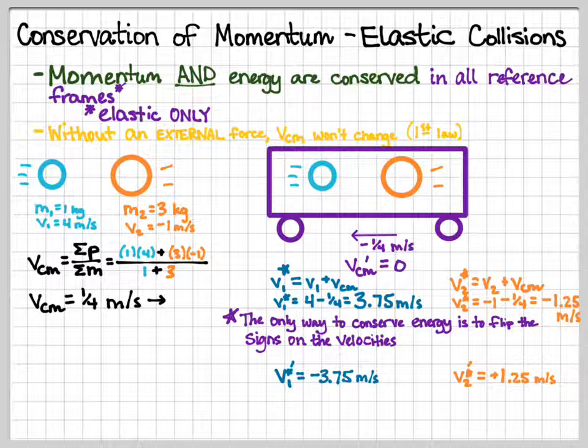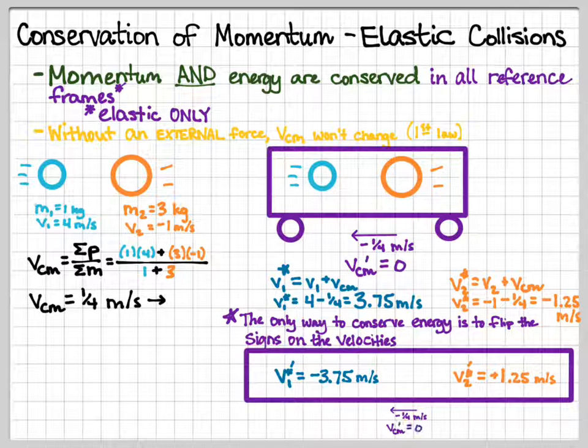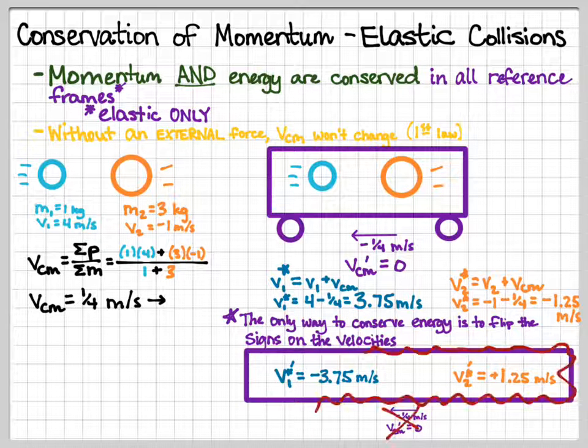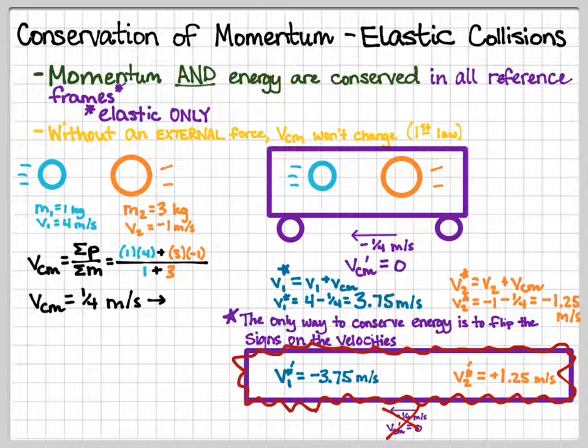Alright, we're not quite done yet, because these are still the velocities to the outside observer. This system is still in the box, the box is still moving a quarter of a meter per second to the left. We want to take it out of the box. So, to get rid of the box, while it was going a quarter of a meter per second to the left, we're going to add a quarter of a meter per second to both of those velocities. So, when that happens, we actually do get,